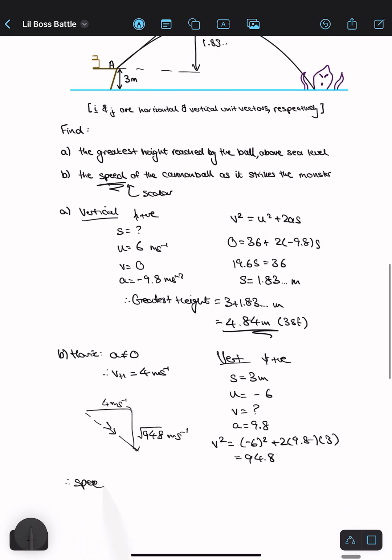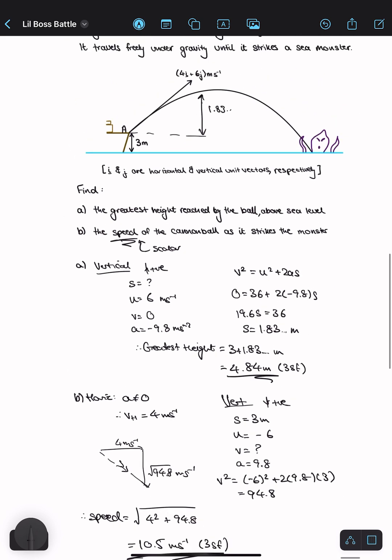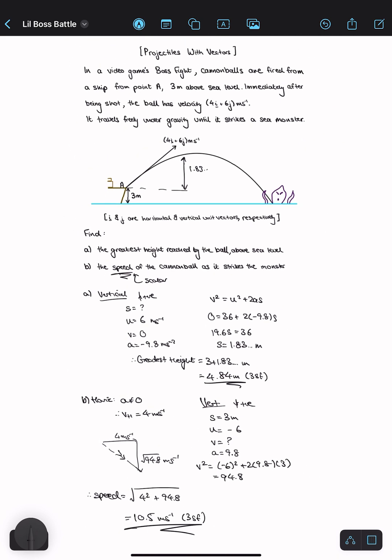So therefore, the speed is the square root of 4 squared plus 94.8, which is equal to 10.5 meters per second to three significant figures. And this is how you would do a vectors projectile question.